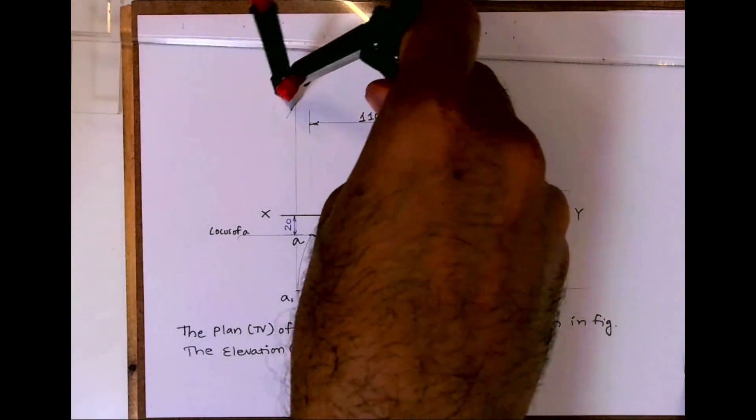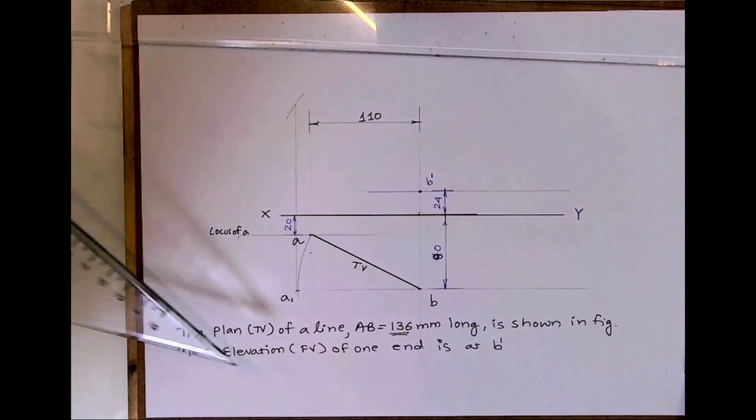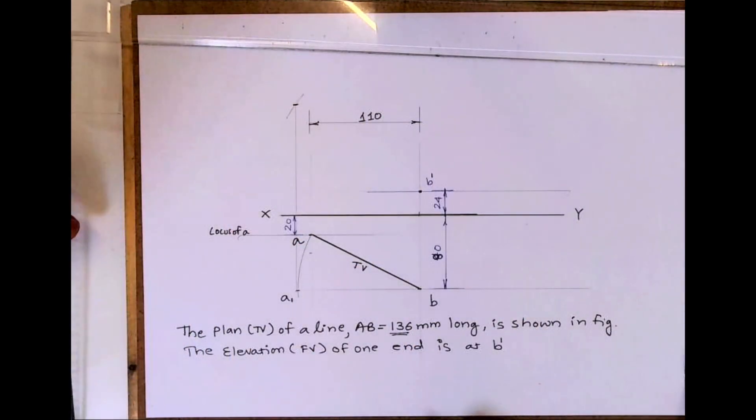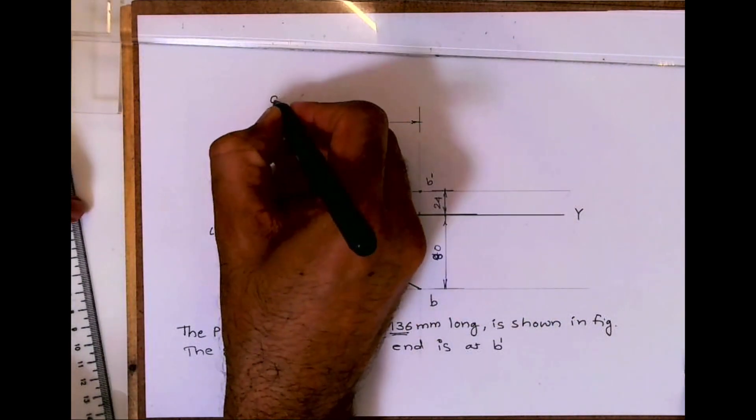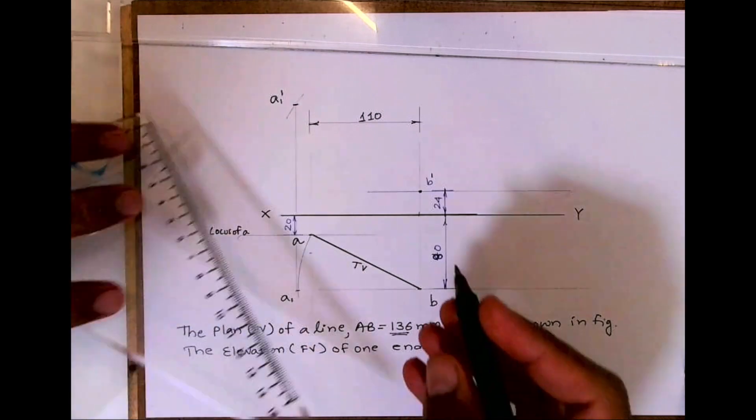So you cut 136 like this on this line where I had drawn the vertical line from A1. So wherever it will cut, that is A1 dash. So this is true length.